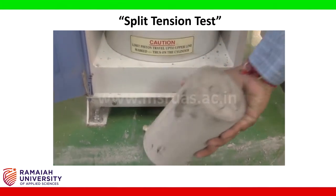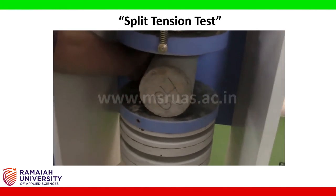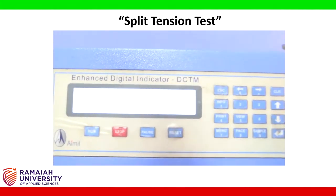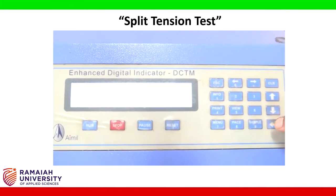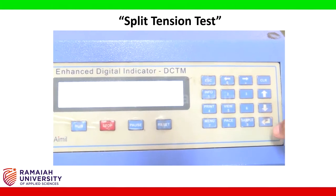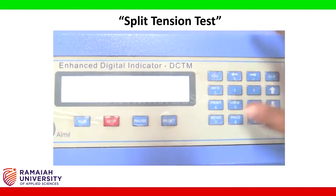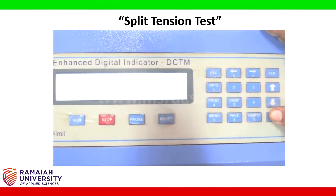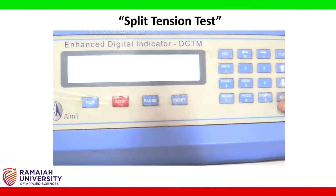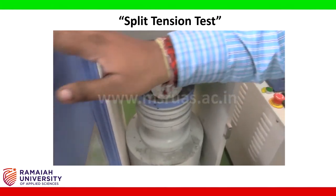We place the specimen into the compression testing machine, not along the length but on the diametrical axis. We enter the type of specimen — cylinder — then enter the diameter and length of the specimen. We select compressive strength as the operating mode and choose SI units. The machine displays the maximum capacity. We close the door and lock the load valve.